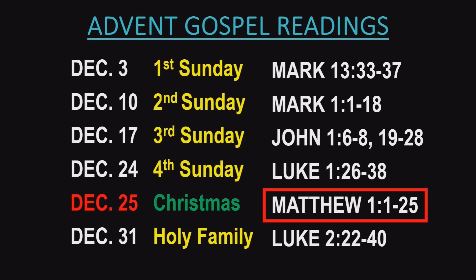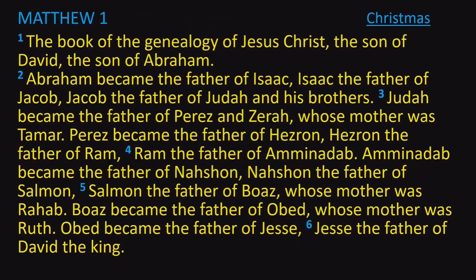Verses 1-17 is Matthew's version of the genealogy of Jesus. I won't read through the entire list, but will point out important verses. Here is the first part of the genealogy: the book of the genealogy of Jesus Christ, the son of David, the son of Abraham.